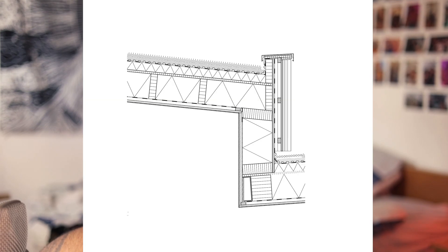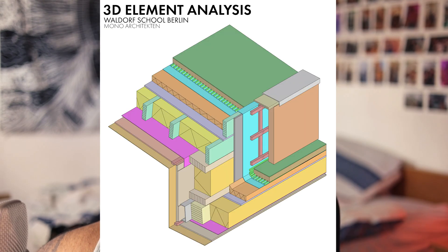Hey guys, what's up? Welcome back to Arch with Imran. I'm Imran. I hope you guys are having a great day. Today I'm going to be showing you guys how I took this 2D detail and turned it into this 3D axonometric. In this video, we're going to be using Rhino to do all of our shapes, Illustrator to clean up the linework, and Photoshop to put it all together. So let's get into it.